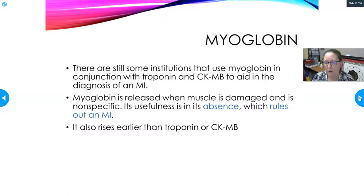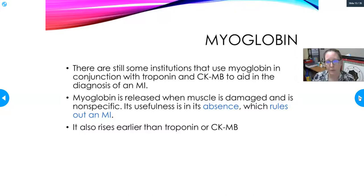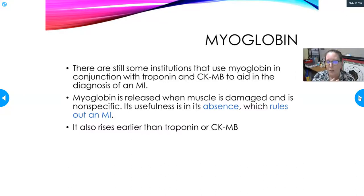Myoglobin is another protein found in muscle; like troponin and CK-MB, it is released when muscle is damaged. The markers vary in how quickly they appear and how quickly they clear from circulation. Myoglobin actually rises earlier than troponin or CK-MB, but it also clears faster from the circulation.